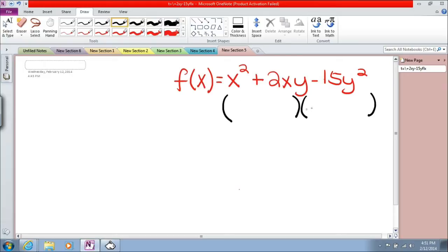Now, the first part of this needs to multiply together to give us this x squared. And so I'm going to break it into x and x, because x times x gives me x squared.